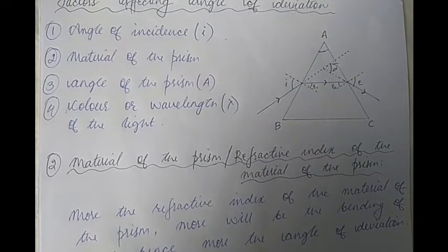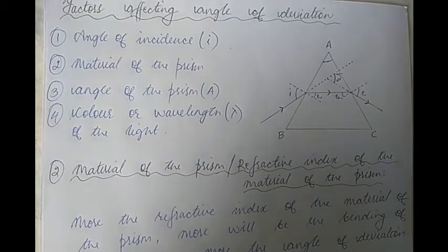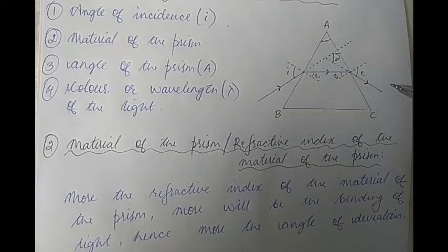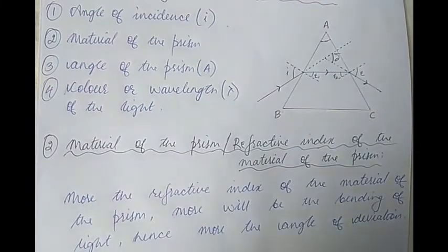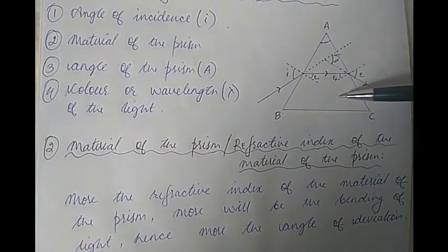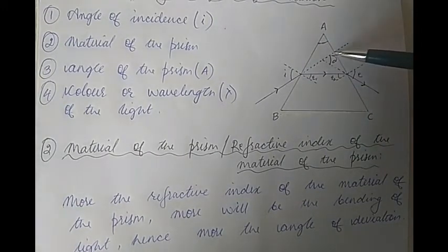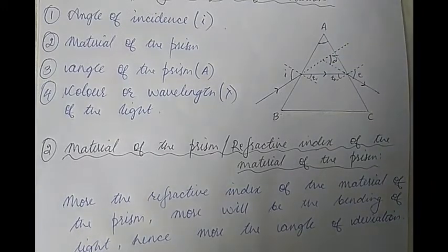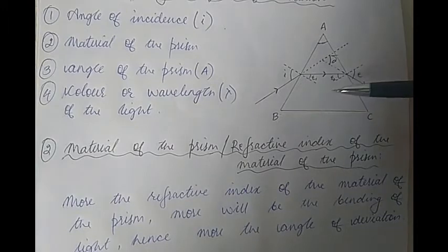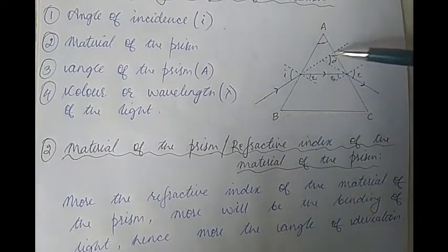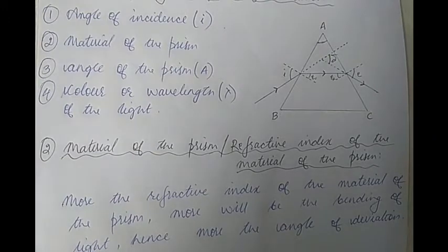Now let us see how the angle of deviation depends on these four factors. We will start with the second factor and deal with the first factor at the very last. The material of the prism, or the refractive index of the material of the prism: we have already learnt that greater the refractive index of a medium, more will be the bending of light — that is, more refraction takes place. Therefore, greater the refractive index of the material of the prism, more will be the angle of deviation, and vice versa.